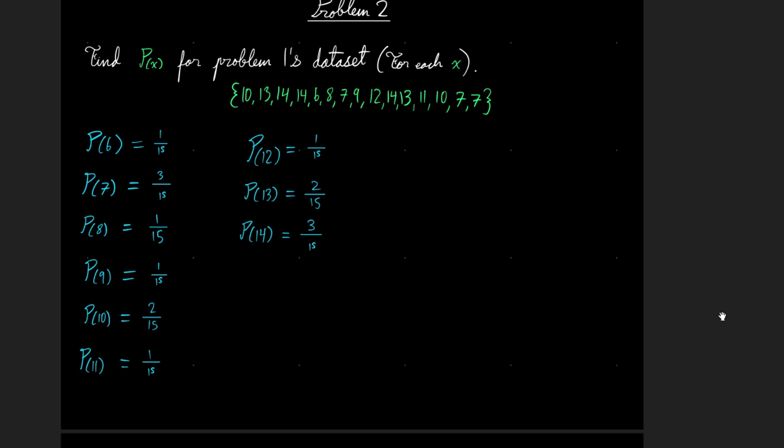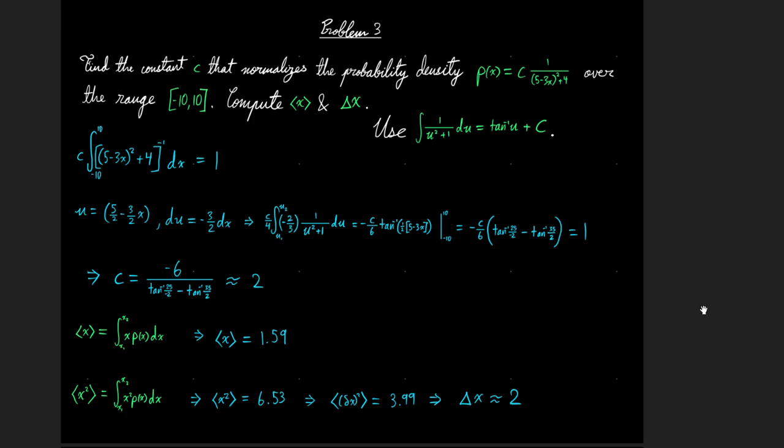For problem two, you're just supposed to find the probability for each individual value of x in the data set. And that's pretty straightforward. Problem three was a little more complicated. You had to actually find the constant c that would normalize the probability density over the range interval negative 10 to 10.